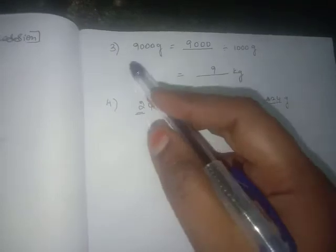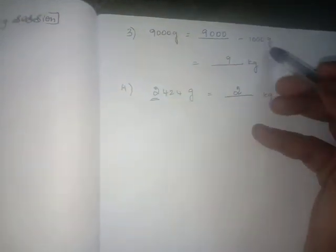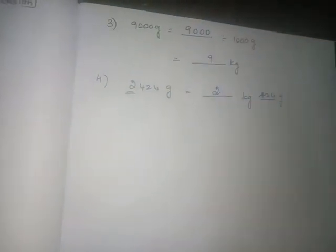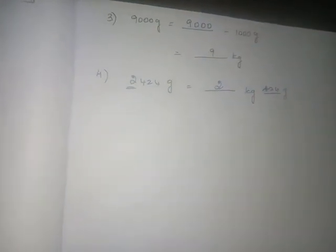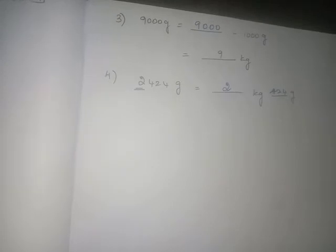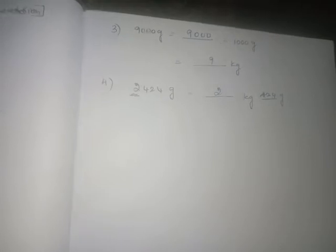The next sum: nine thousand grams is equal to dash kilogram. Every gram converted to kilogram means it is divided by one thousand — that is the main concept. Every one thousand grams is one kilogram. So nine thousand divided by one thousand: all the zeros will be cancelled.